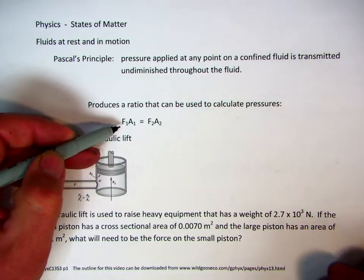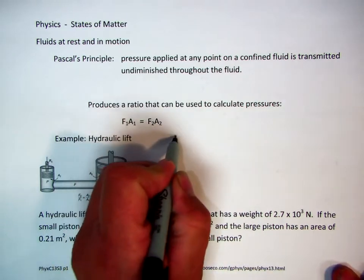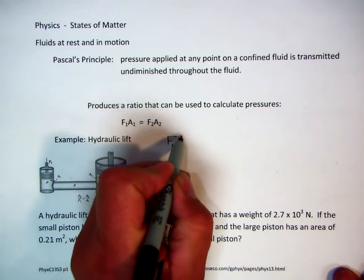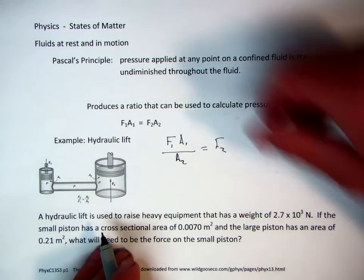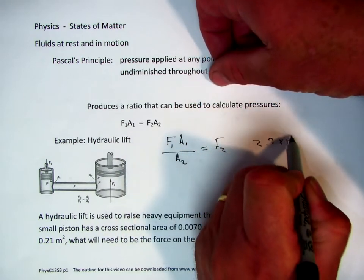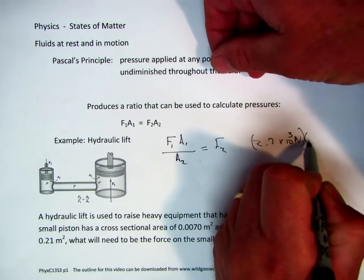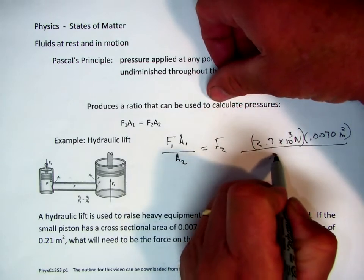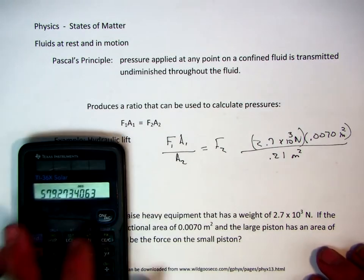Well, let's just use this up here and isolate it. This is what will be the force on the small piston so we're going to look for force 2. So F1, A1 over A2 is equal to F2. What's our force 1? Our force 1 is 2.7 times 10 to the third newtons. What is our area 1? It's 0.0070 meters squared divided by our area 2, 0.21 meters squared is equal to our F2.